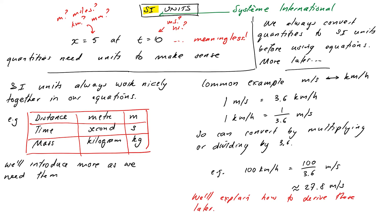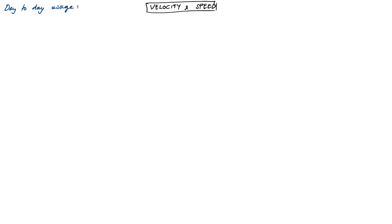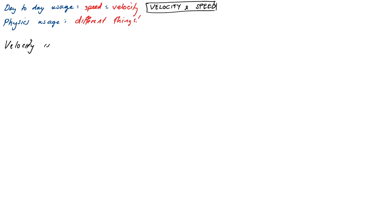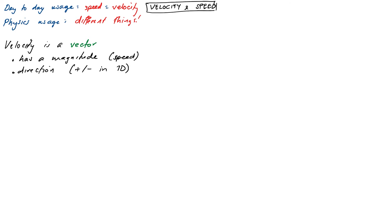Our next kinematic quantity is velocity. In day-to-day language, velocity and speed tend to mean the same thing — you can have a high-speed blender or a high-velocity fan — but in physics they have more precise meanings. Just like displacement is a vector and distance is a scalar, velocity is a vector and speed is a scalar. Velocity has both a magnitude, which is the speed, and a direction — for us, positive or negative depending on whether it's to the right or to the left.